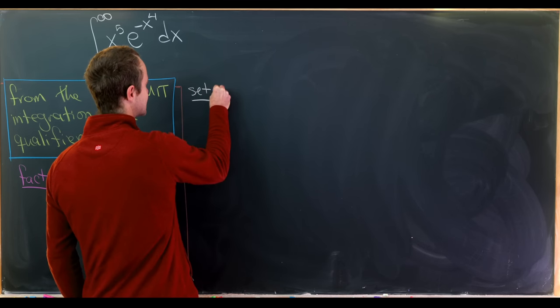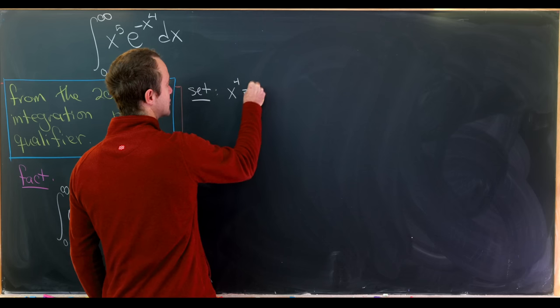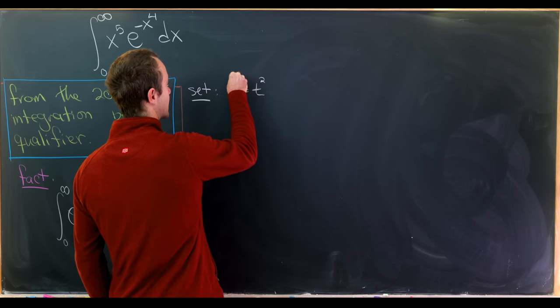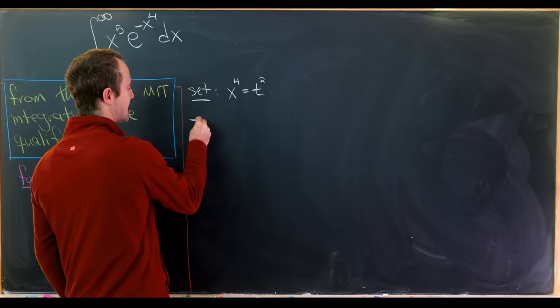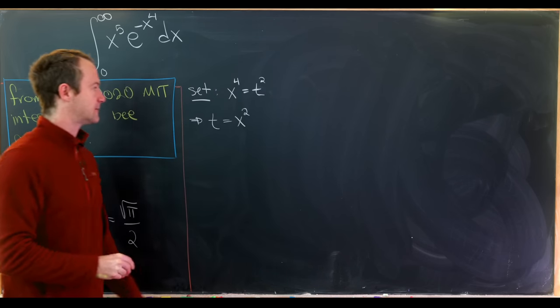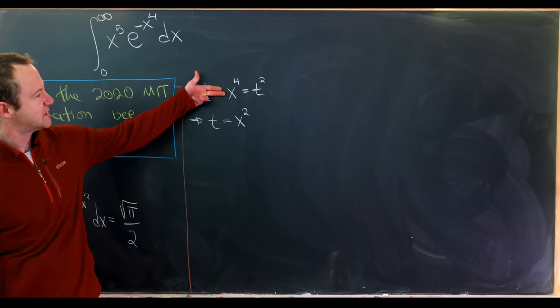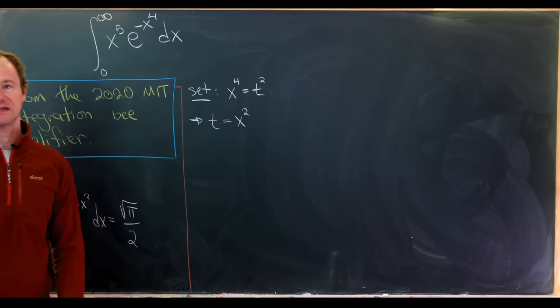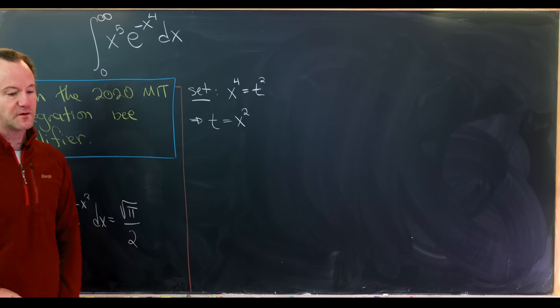So let's set x to the 4th equal to t squared. But let's notice that that means that t is equal to x squared. And furthermore, this substitution right here will give us an e to the minus t squared here, which will hopefully be nice.